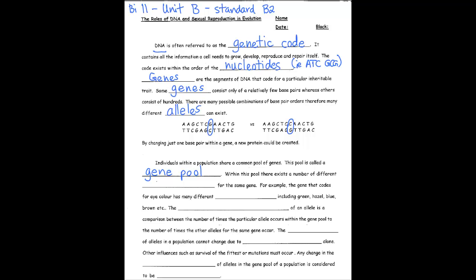Within this pool, there exists a number of different alleles for the same gene. For example, the gene that codes for eye color has many different alleles.